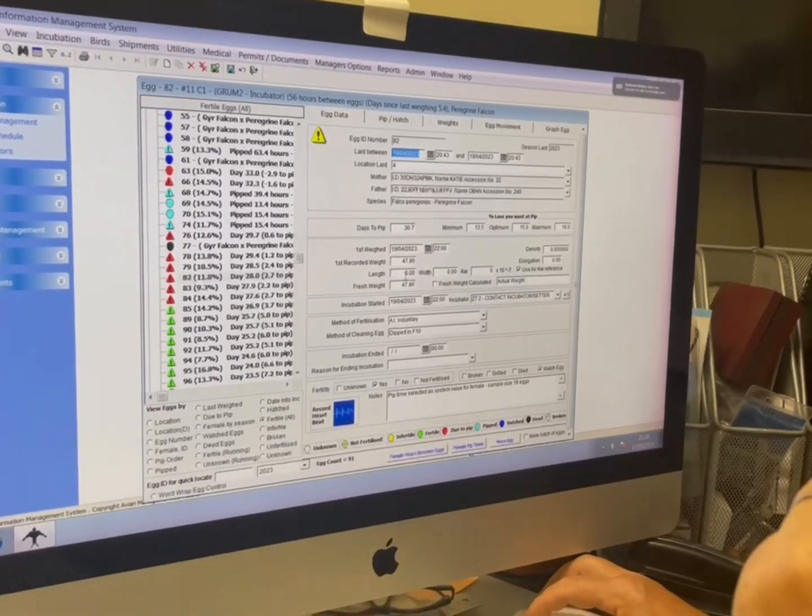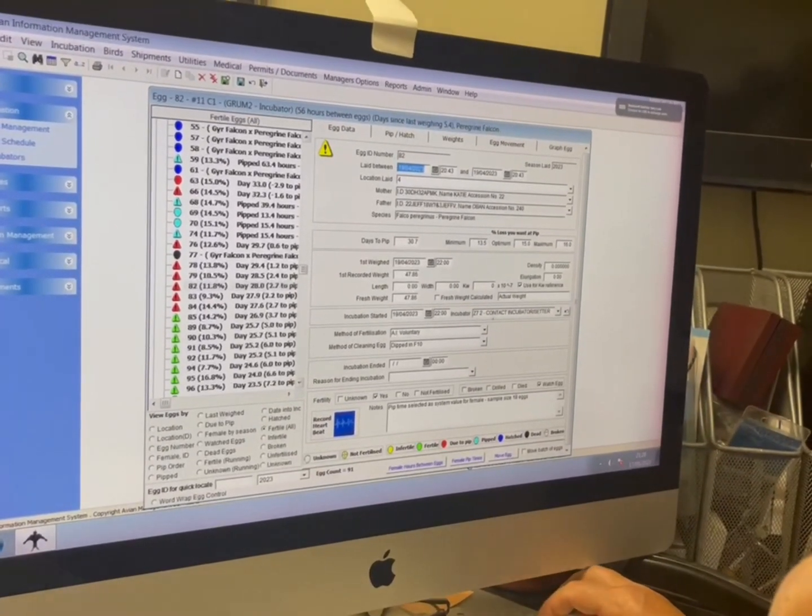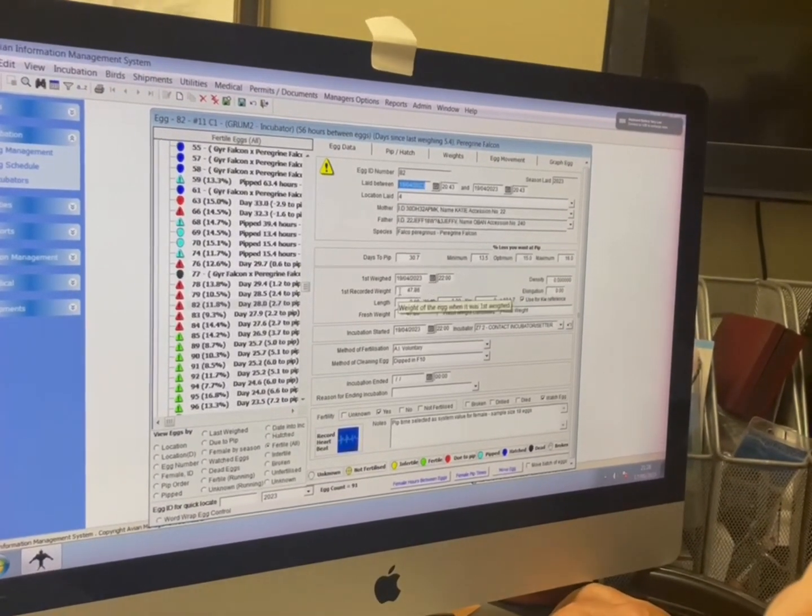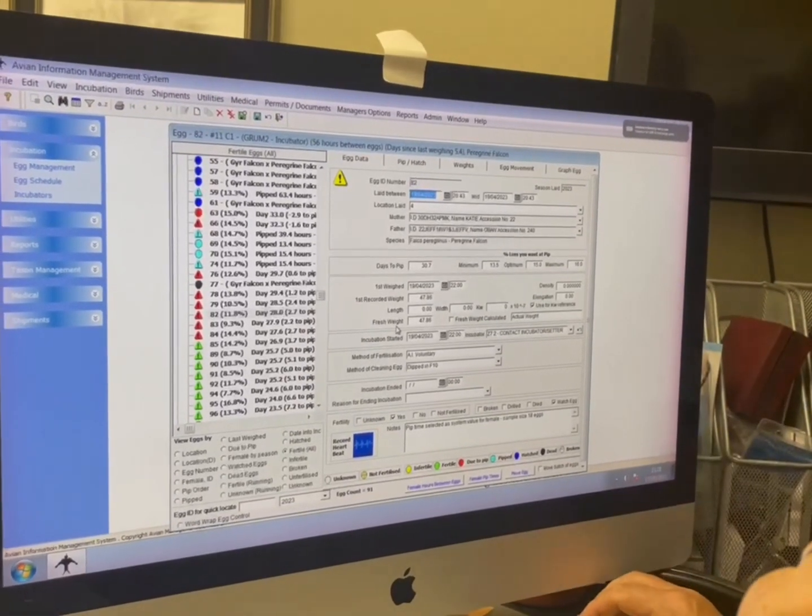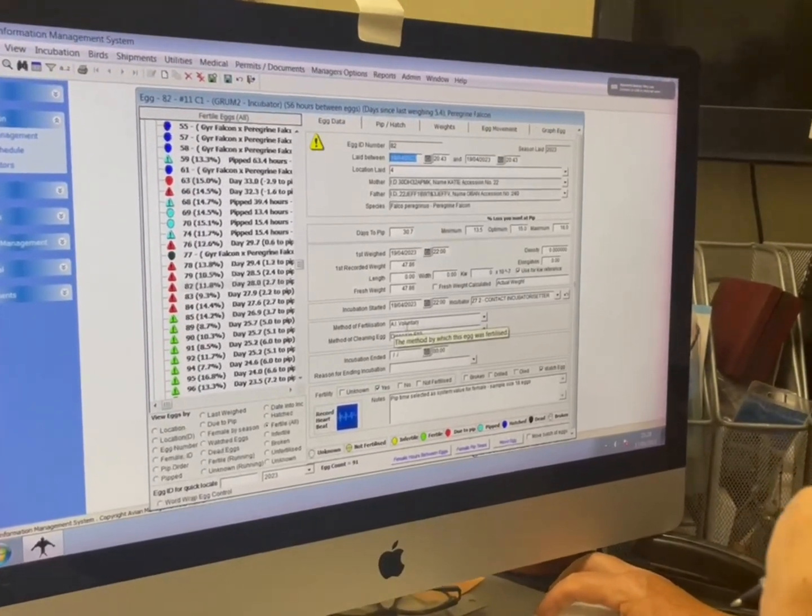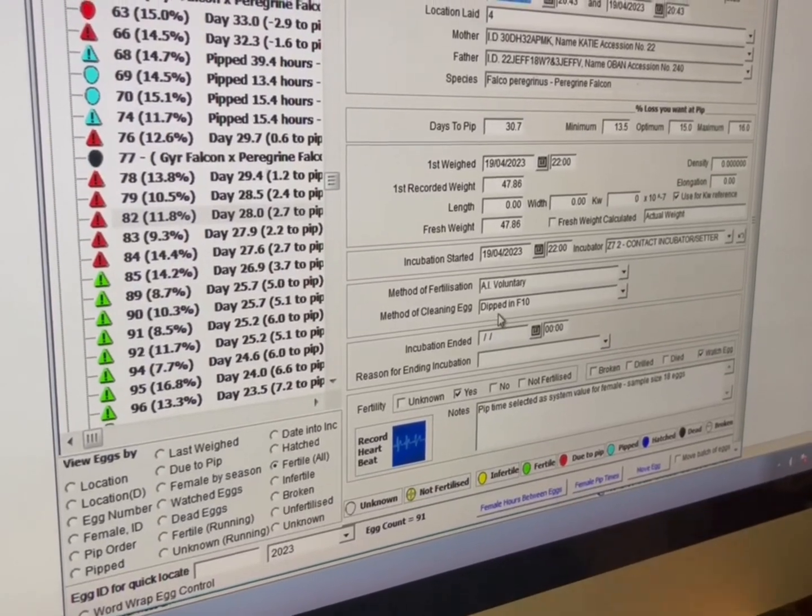And this automatically does the calculation for them eggs. And the more calculations it does for a particular egg, as you put the weights in, it also makes the calculation more accurate. So there you go. Method of fertilization: AI voluntary. And we clean our eggs so it was dipped in F10.